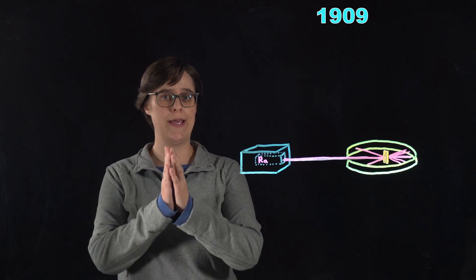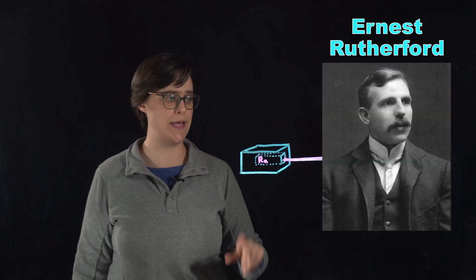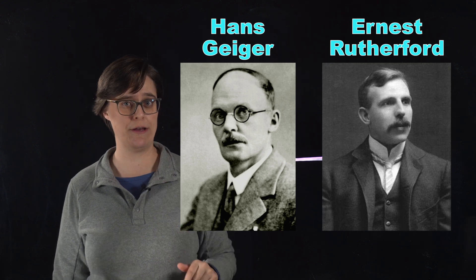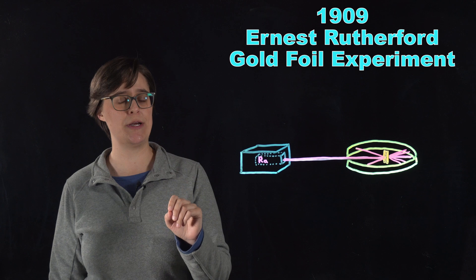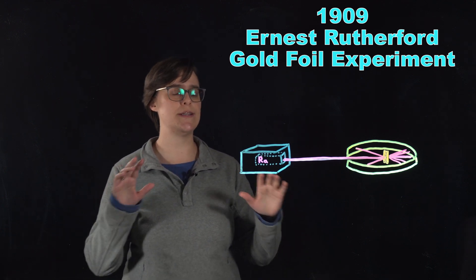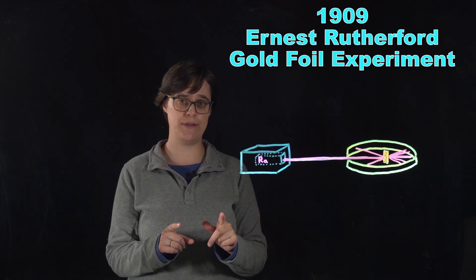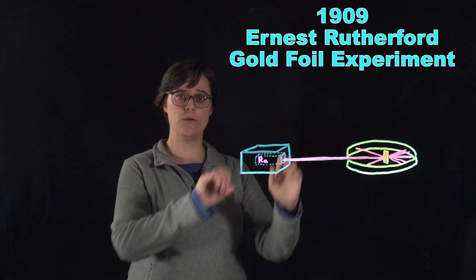The year is about 1909, and Ernest Rutherford and his team, including Hans Geiger of Geiger Counter fame and Ernest Marsden, are conducting an experiment that will revolutionize our understanding of the structure of the atom. It's called the Gold Foil Experiment.